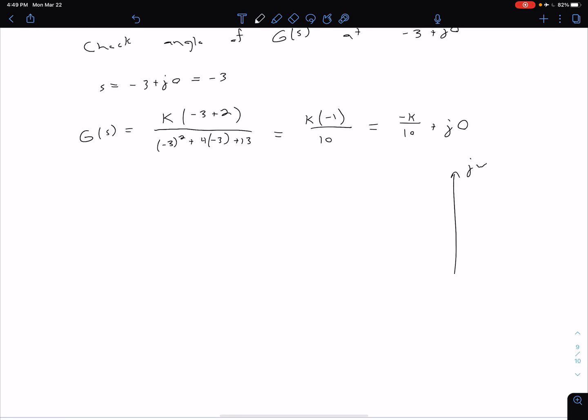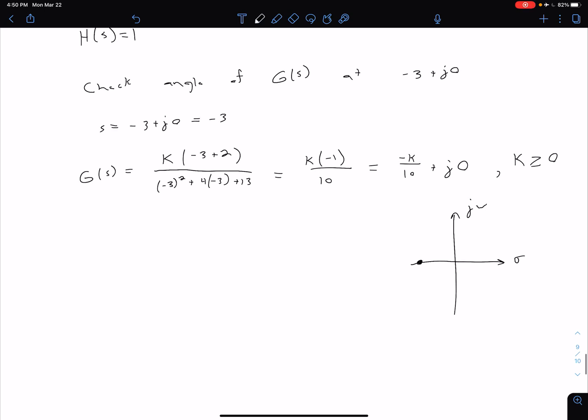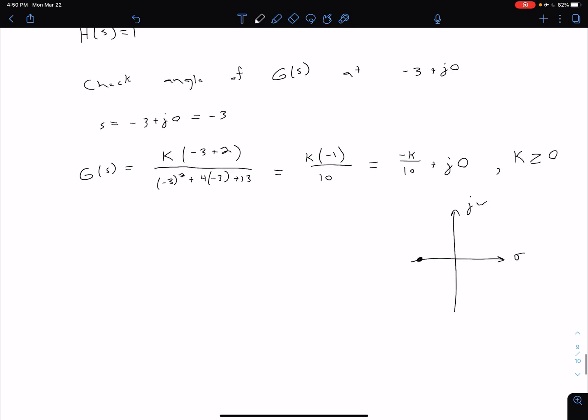We have jω for our imaginary axis and σ for the real axis. If we're at -K/10, and assuming K ≥ 0, we're at some point here. We can see that we can achieve that -3 + j0 point if we select the appropriate gain K.